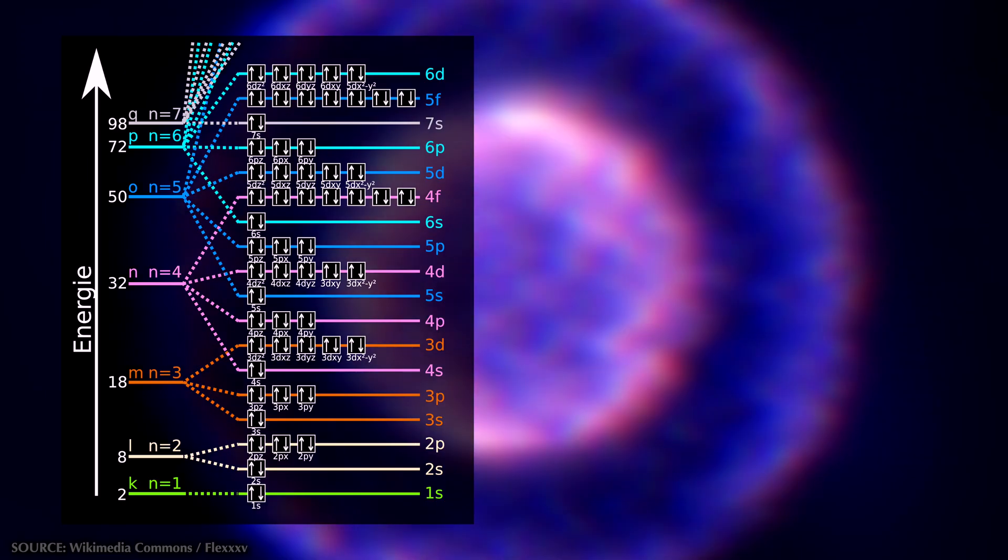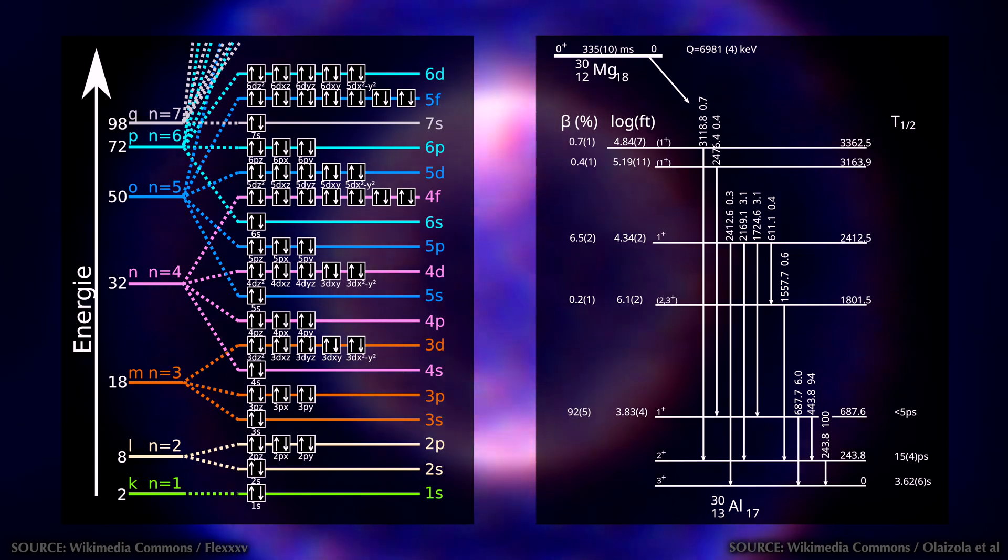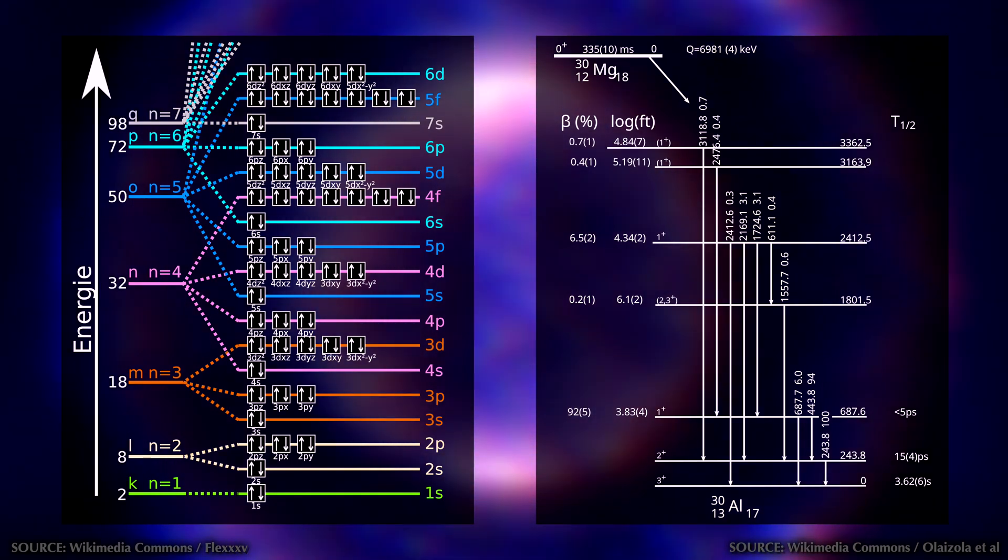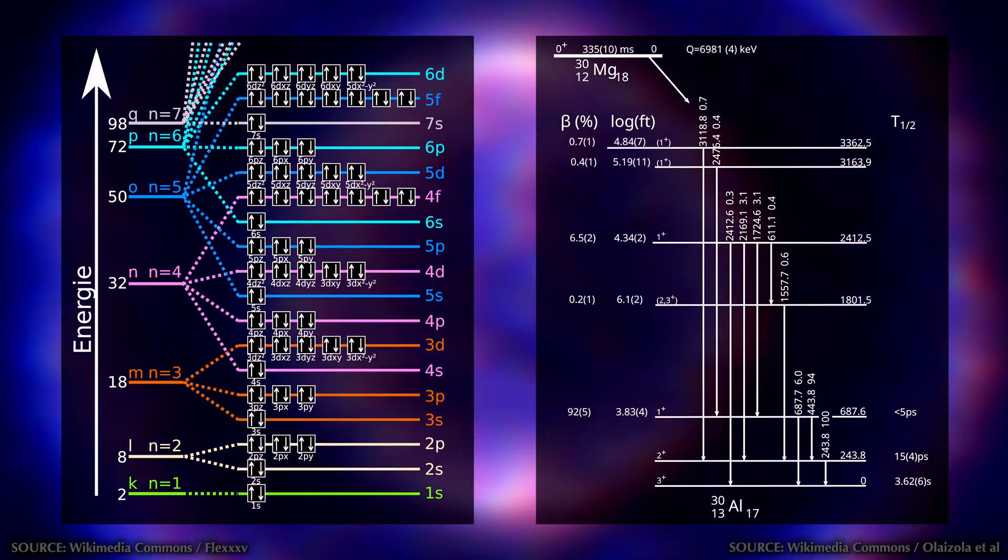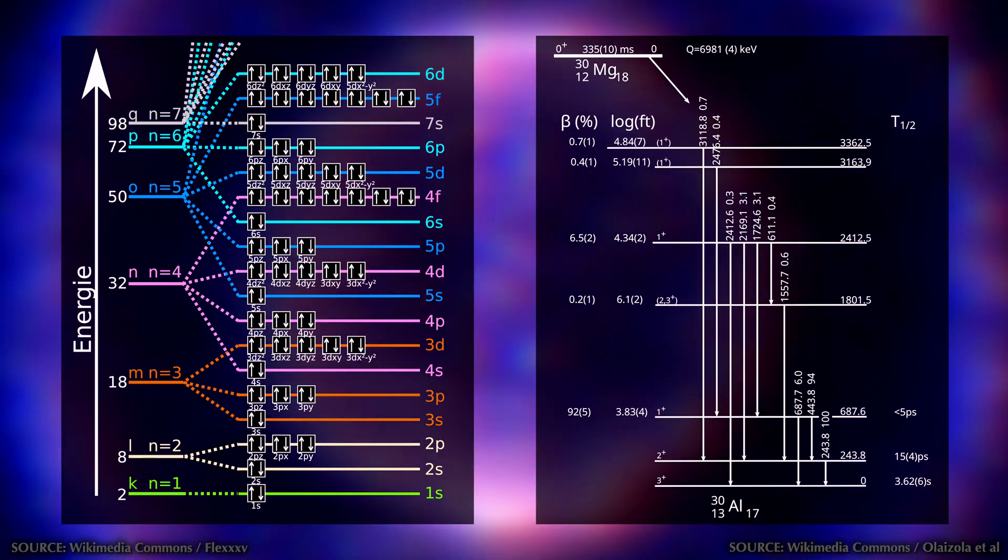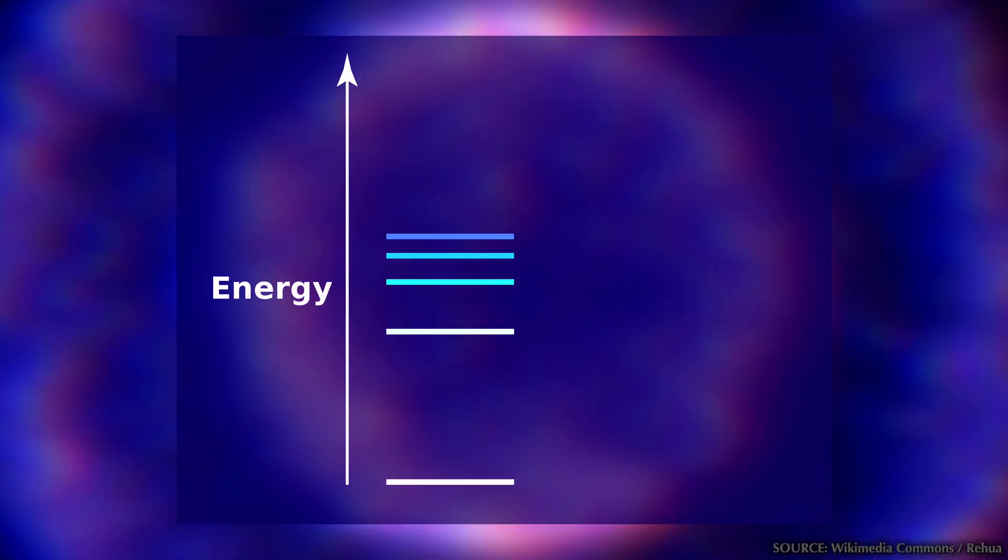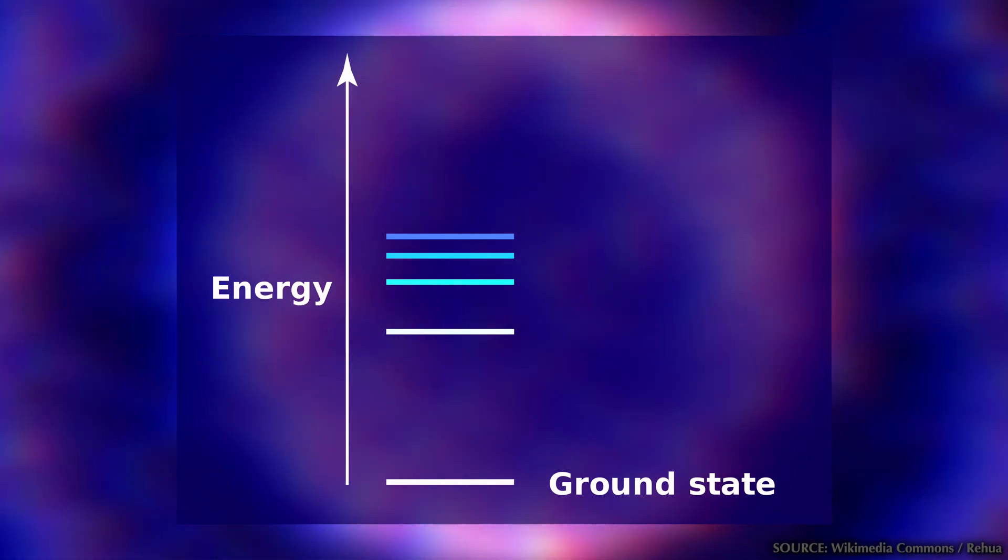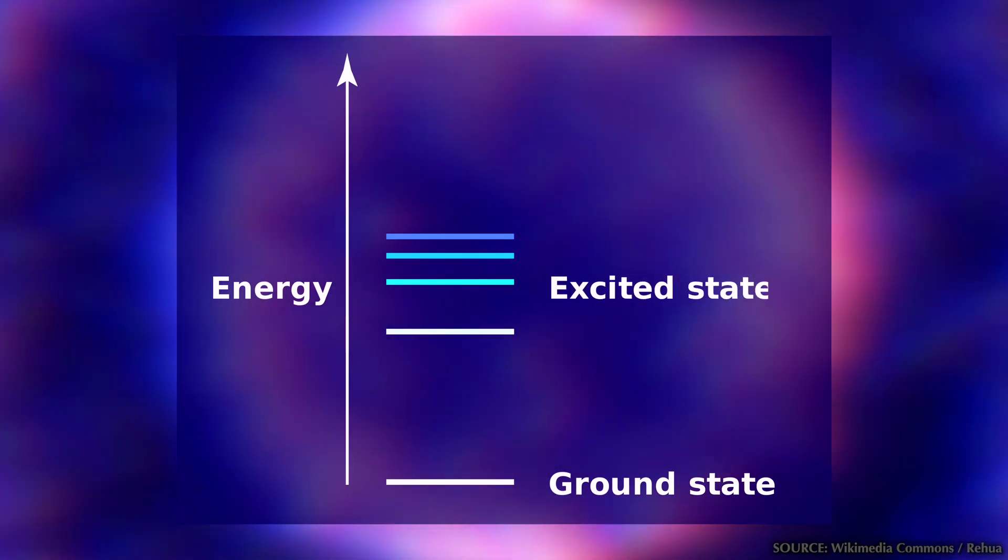This energy diagram can become quite complex. But the thing to remember is that what you see here are not positions in space. These are energies. We call the lowest possible energy the ground state and the other states are called excited states.